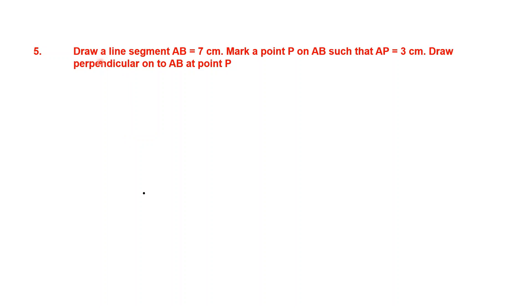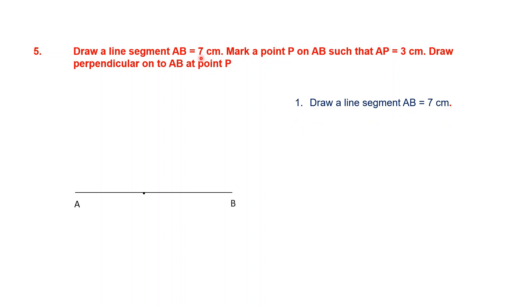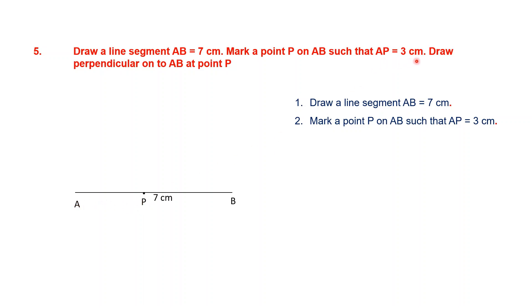Question 5. Draw a line segment AB — they've given us a measurement and told us what else to do. Mark a point P on it such that AP is 3 centimeters. Then draw a perpendicular to AB at point P. The first part: draw line segment AB equals 7 centimeters. Mark point P on AB such that AP is 3 centimeters. Take your ruler, get 3 centimeters from A — that point is P. So AP is 3 centimeters. First part done.